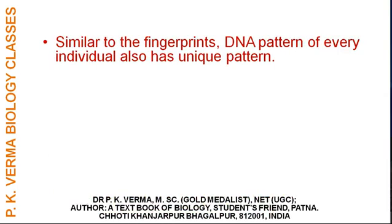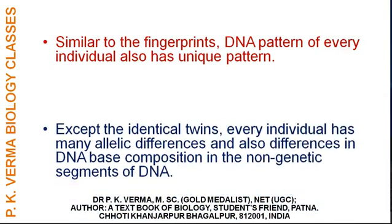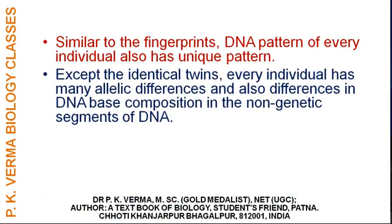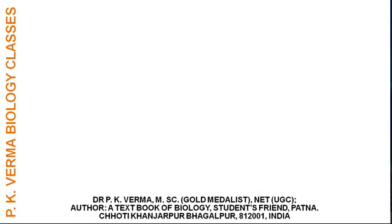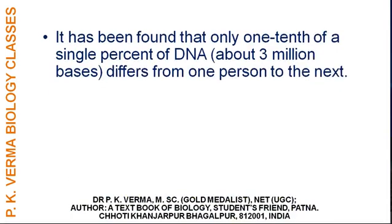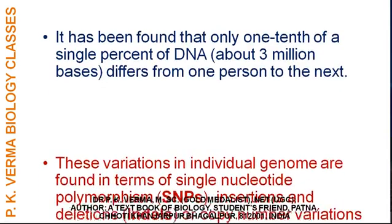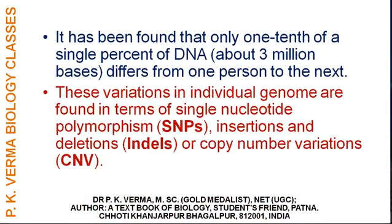Similar to fingerprints, the DNA pattern of every individual also has a unique pattern. Except for identical twins, every individual has many allelic differences and differences in DNA-based composition in the non-genetic segment of DNA. But sequencing the entire length of DNA and matching it with another sample is not practically possible — it is costly, time-taking, and needs a highly sophisticated DNA sequencer as well as a supercomputer. It has been found that only one-tenth of a single percent of DNA, about three million bases, differs from one person to another.